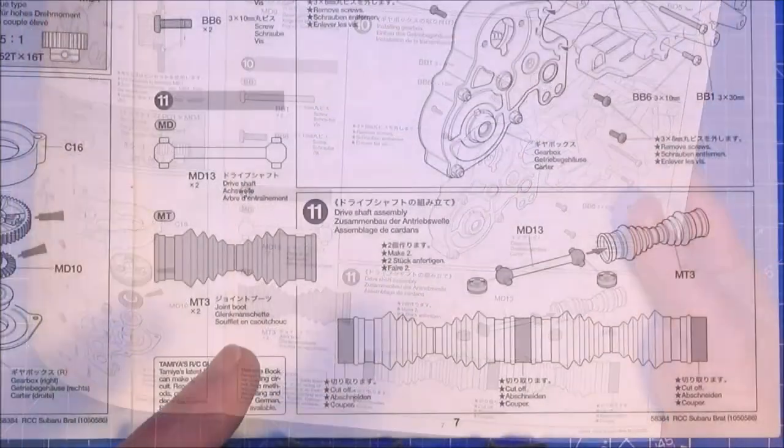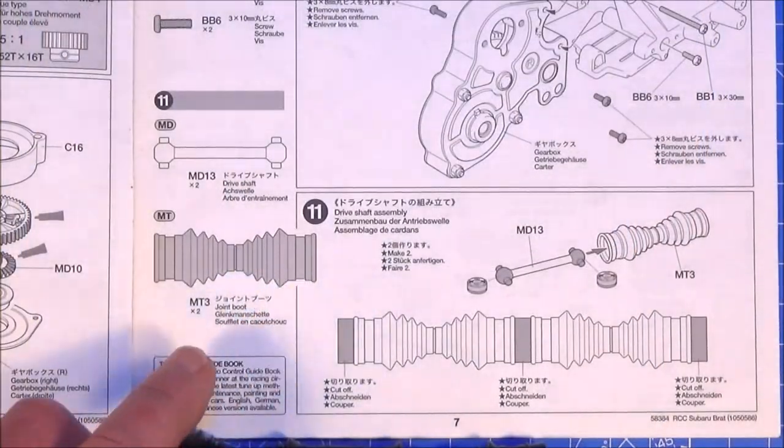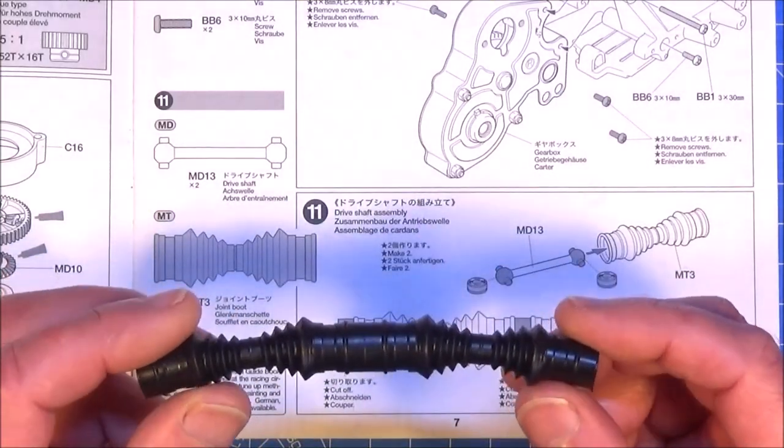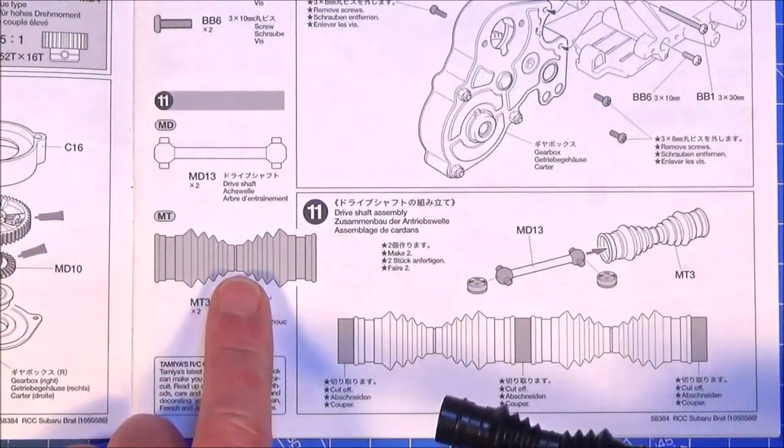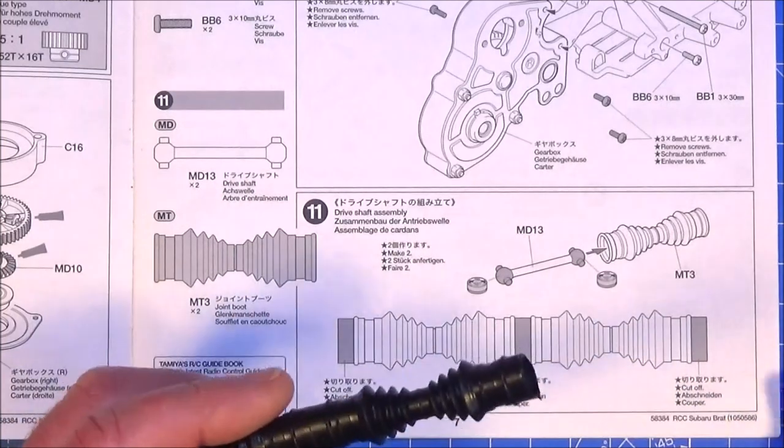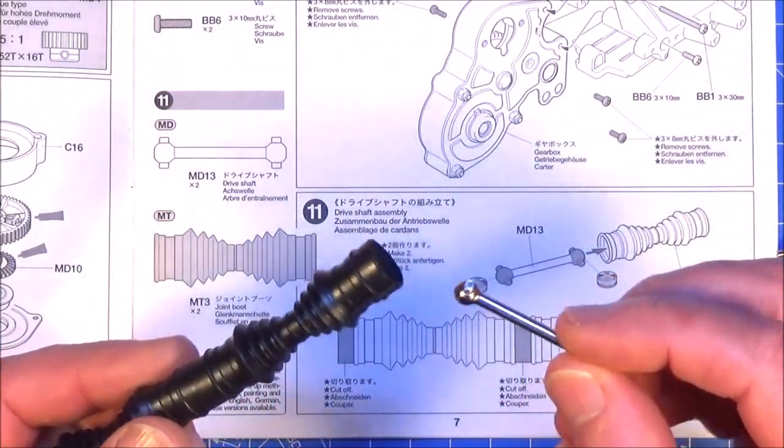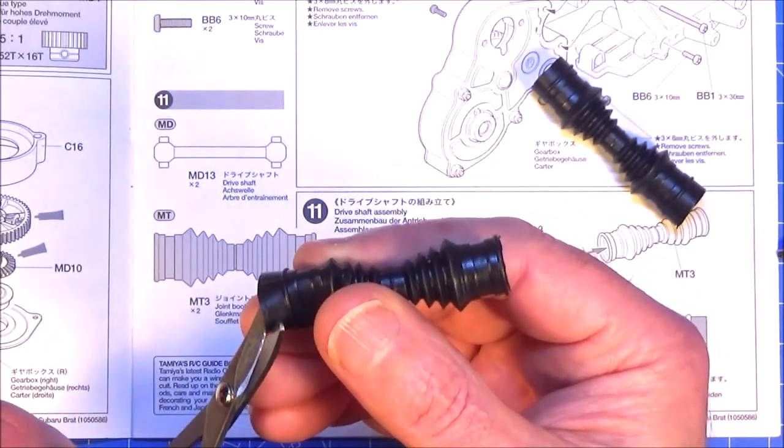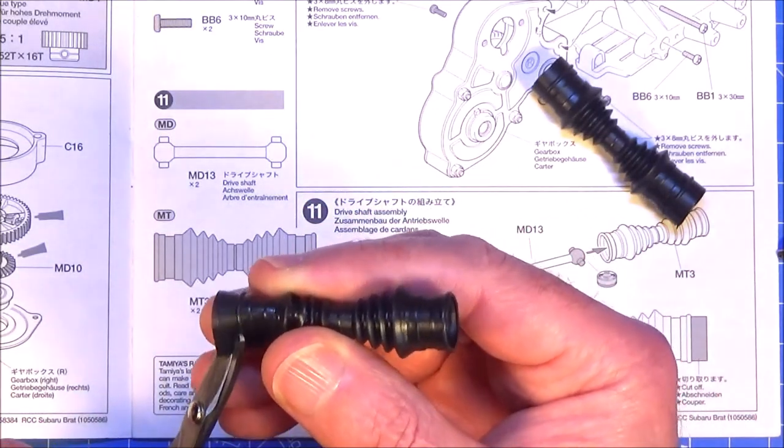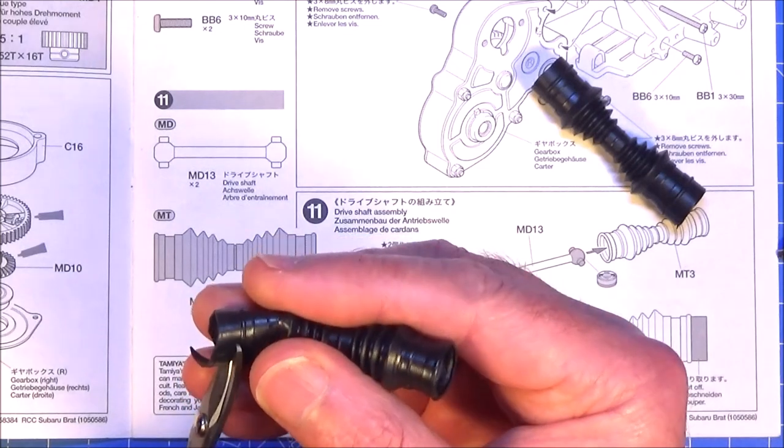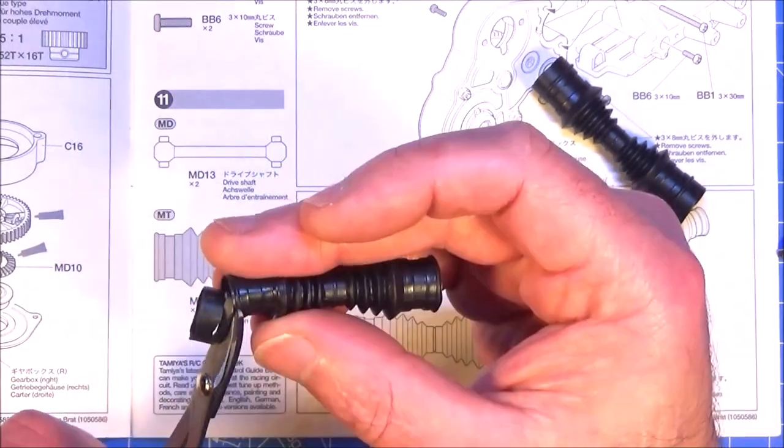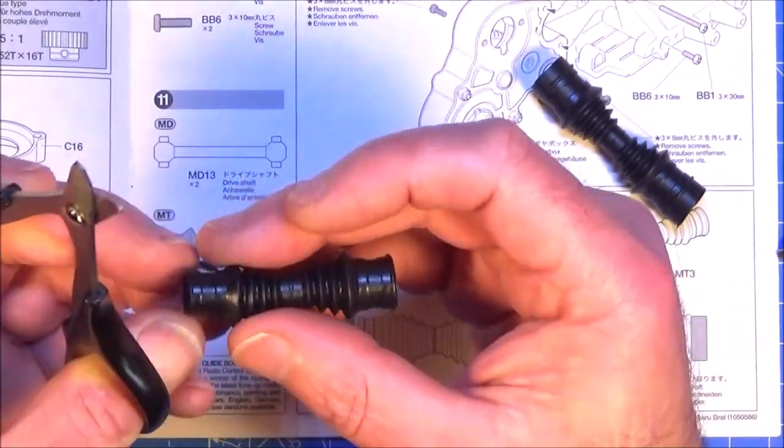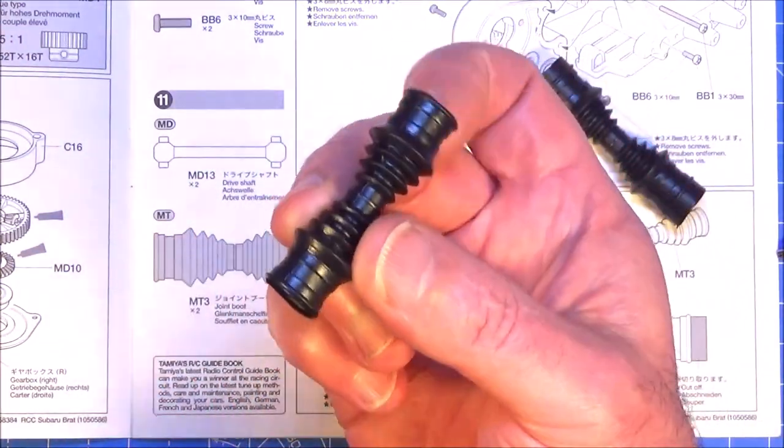So step 11 is the drive shaft assembly. Basically all we're going to do is cut down this rubber boot into two halves that resemble this piece here and then slide in the dog bones. Now I've never had any luck snipping straight across with a straight pair of scissors, so I'm just going to trim round with these polycarbonate scissors, get it as close as I can. I think that's good enough, I'll just do the other one.